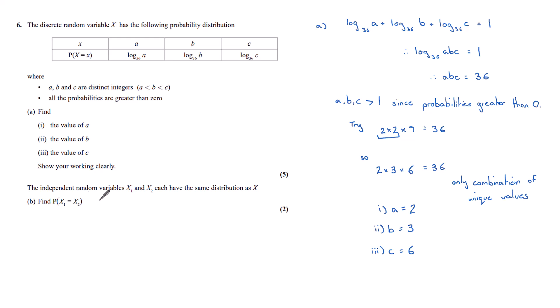The independent random variables x1 and x2 each have the same distribution as x. Find the probability that x1 is equal to x2.